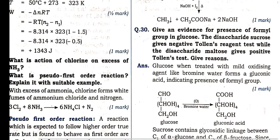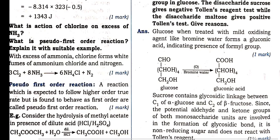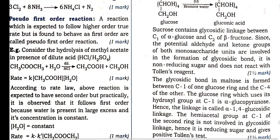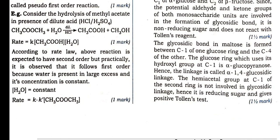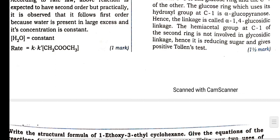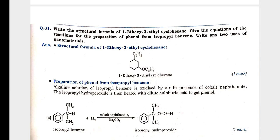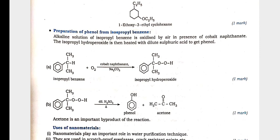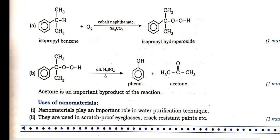For aldehyde group: bromine water reaction — CHO group is converted to carboxylic acid. Tollens' reagent does not show reaction because of absence of free carbonyl group in sucrose. IUPAC name given — draw structural formula: cyclohexane, with ethoxy and ethyl groups. Preparation of phenol from isopropyl benzene (cumene): air oxidation takes place to form isopropyl hydrogen peroxide; then addition of sulfuric acid gives phenol. Acetone is an important byproduct.